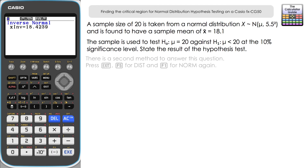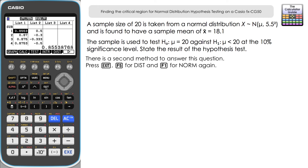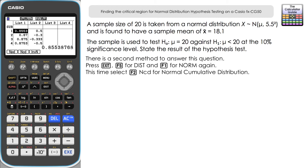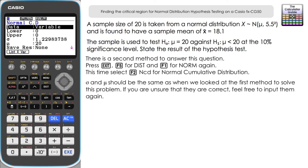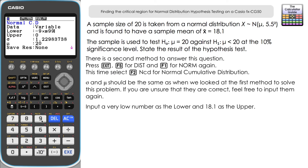Method 2 uses the normal cumulative distribution. Navigate back to distribution → normal → NCD (normal cumulative distribution), selecting variables. The sigma and mu values are the same as before. We want the probability of getting a result of 18.1 or less, so set the lower limit to −9×10⁹⁹ and the upper limit to 18.1.